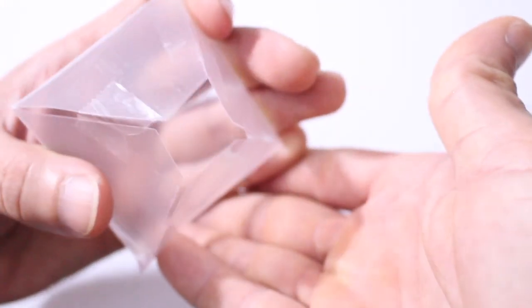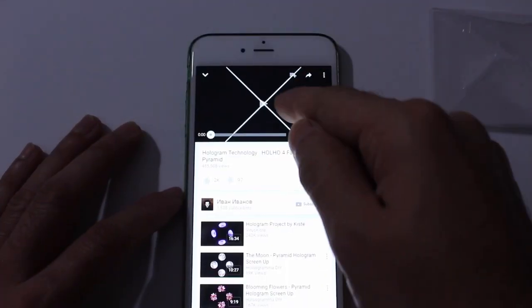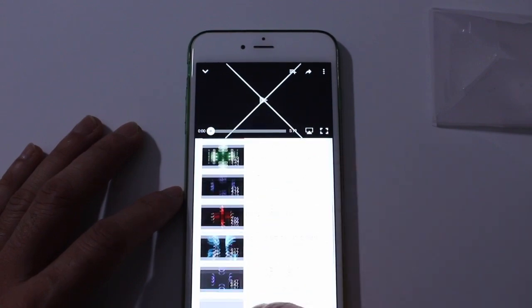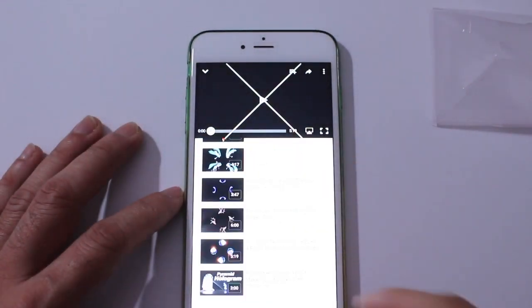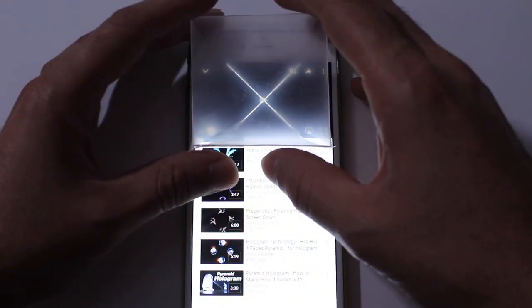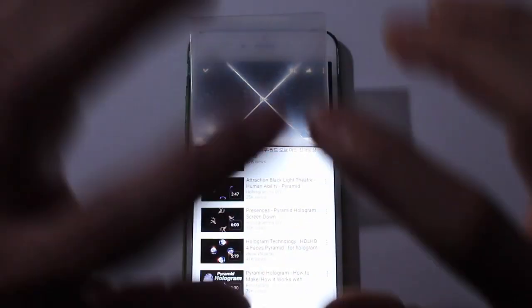Next time we'll have links in the description to all these holographic videos and you want to go ahead and turn the brightness up on your smartphone. So this works on all smartphones and you want to line up the pyramid right where that X is. And now we'll go to eye level and I'll show you guys what it looks like.